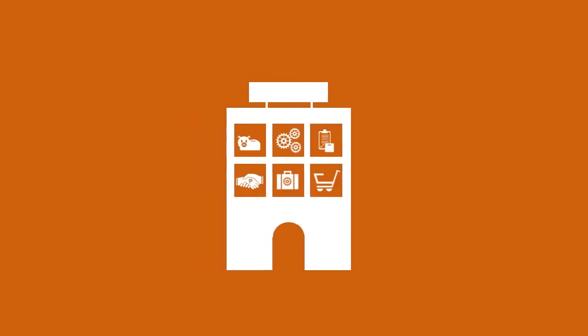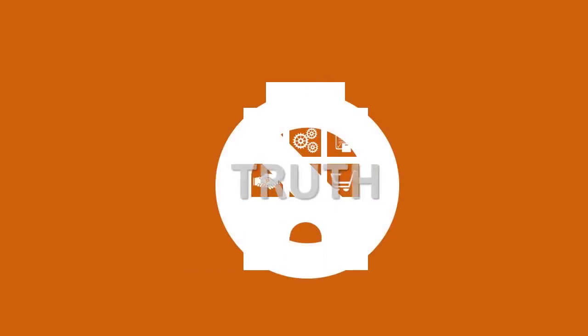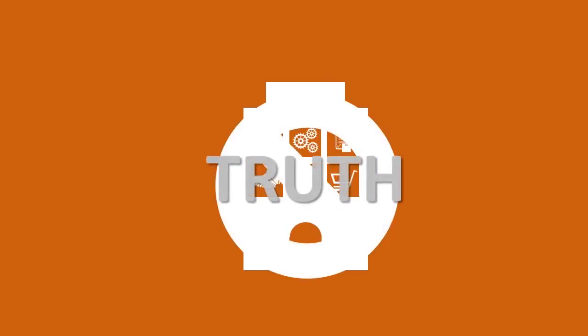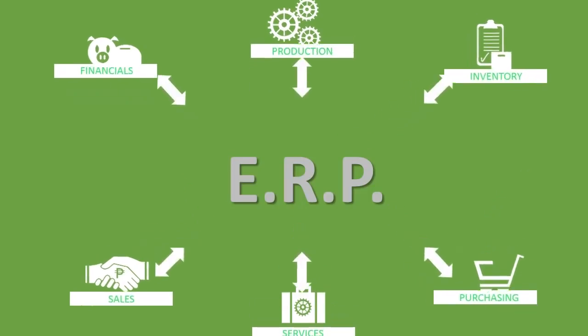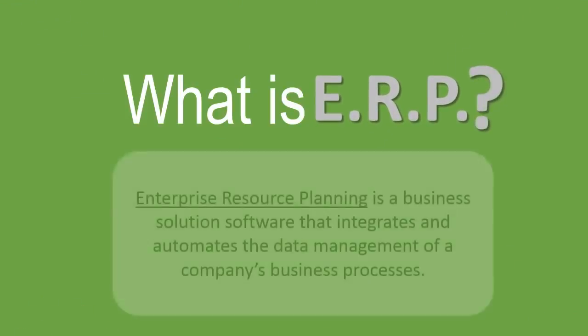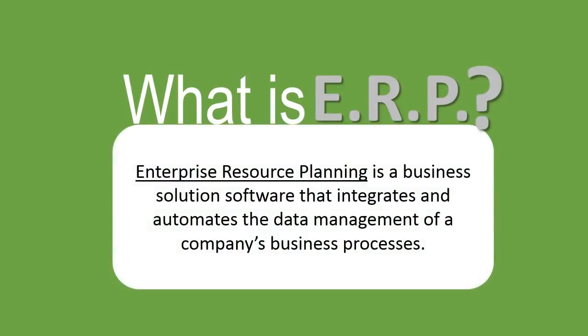Without a single system, you don't have a single version of the truth. With an ERP system in place, all your business processes can be integrated to create a seamless stream of data. Enterprise Resource Planning is a business solution software that integrates and automates the data management of a company's business processes.